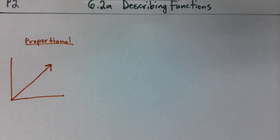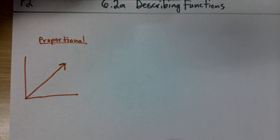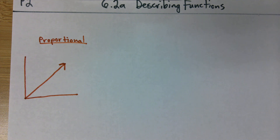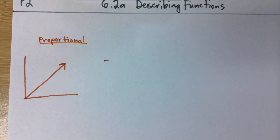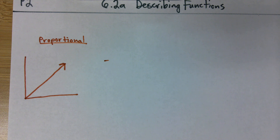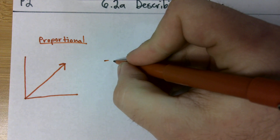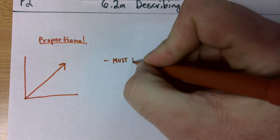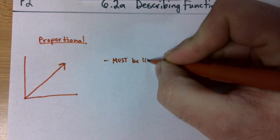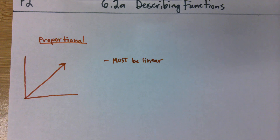So this is what our proportional relationships look like when they're graphed — something like that. Let's make a couple notes about this. If we have a function that's proportional, it must be linear. Being linear is half of what a proportional relationship is. What's the other half of a proportional relationship?